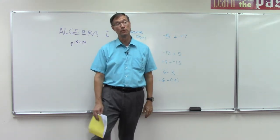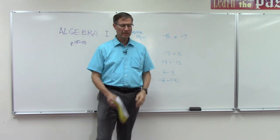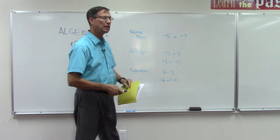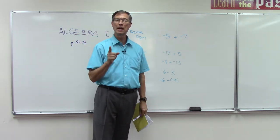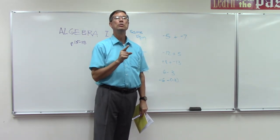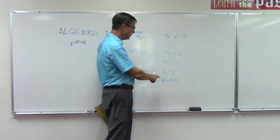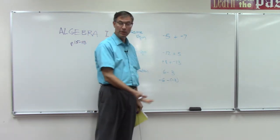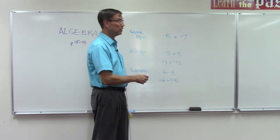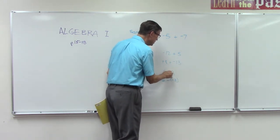Alright, next rule: subtraction. This one, the way I have my students memorize it, is I say we're going to change subtraction to addition and change the second number to its opposite. Now you know from kindergarten that 6 minus 3 is 3. But we're going to do it the algebraic way. We're going to change subtraction to addition and change the second number to its opposite.